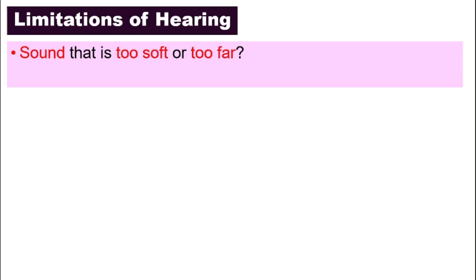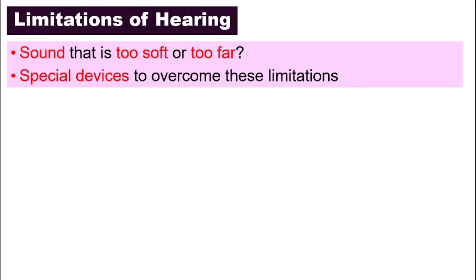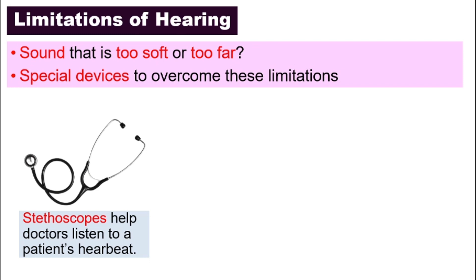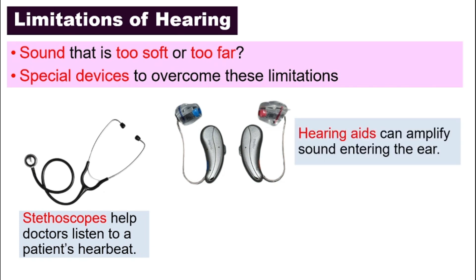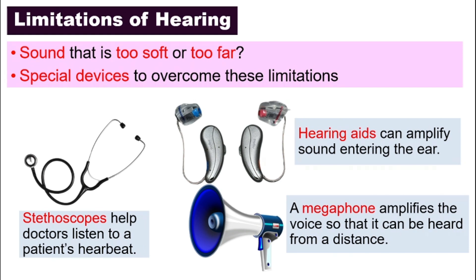So what if the sound is too soft or too far away? We can't hear it. We have special devices to help us overcome these limitations. For example, doctors use a stethoscope to help them listen to a patient's heartbeat. Certain people are born with a hearing defect and can wear hearing aids, which amplify the sound — making it louder as it enters their ear. And when we need to talk across a very large field, we can use a megaphone, which amplifies the voice so it can be heard from a greater distance.